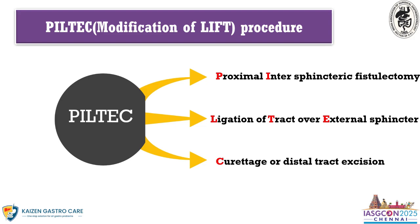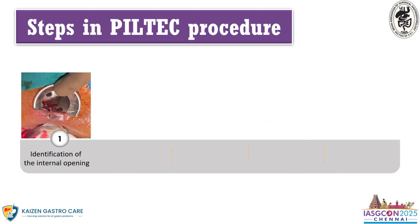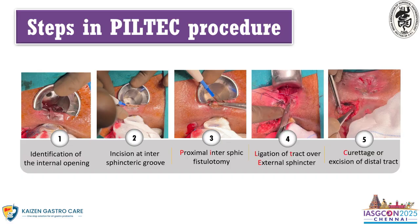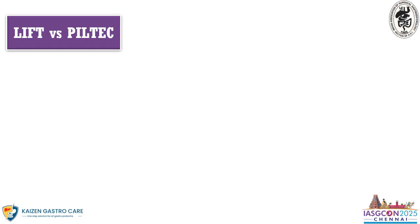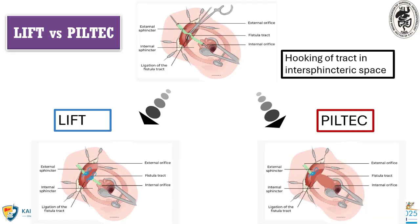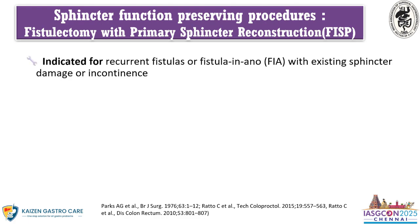The procedure we prefer for sphincter-preserving is PILTEK: Proximal Intersphincteric fistulectomy with Ligation of the Track and Excision of the distal track. The steps are: identify the internal opening, take an incision at the intersphincteric groove, perform proximal intersphincteric fistulectomy, ligate the track over the external sphincter, and curettage or excise the distal track. The key difference between LIFT and PILTEK is that in LIFT you ligate on both sides, whereas in PILTEK you excise the central disease first and then ligate over the external sphincter — that is the only difference.